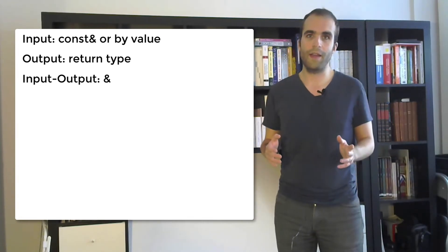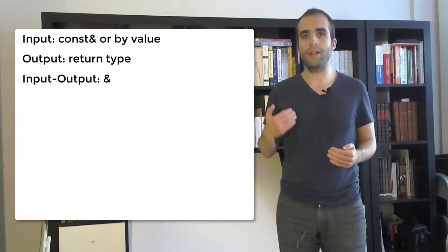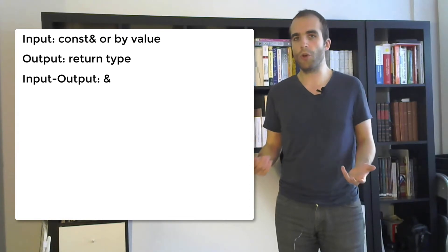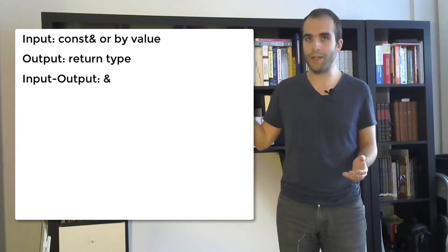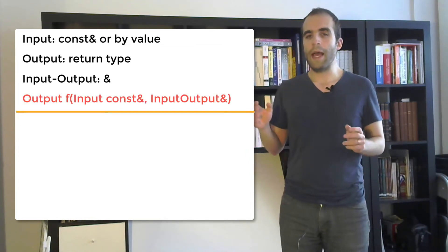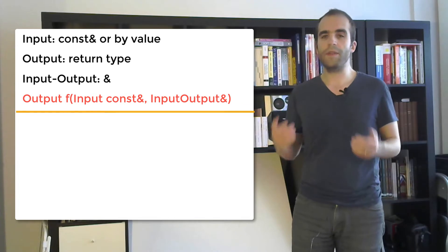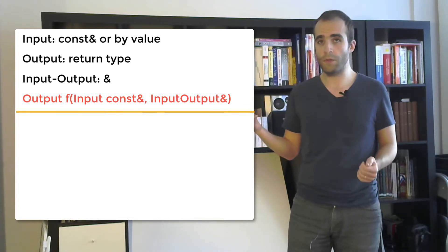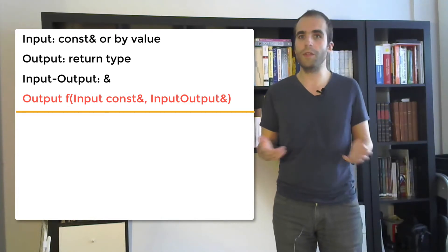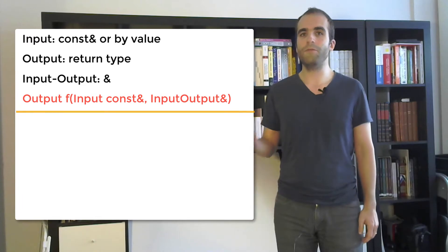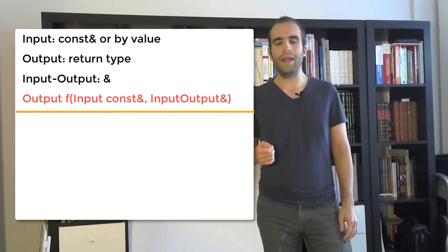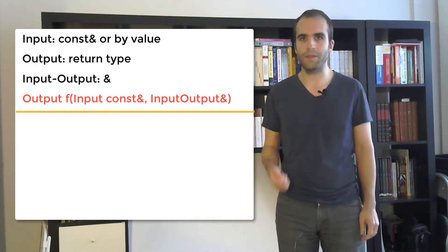This particular case happens, for example, when you have an object that you build successively by calling functions that pass it around. But it's not that common compared to the other cases of input and output. So we won't talk about that one more for today. Now passing input as a reference to const or by value is a natural thing to do and that's what we do generally in code.